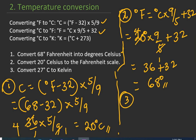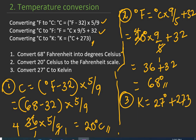Finally, how do you convert from degrees Celsius to Kelvin? Very simple. Let's convert 27°C to Kelvin. You use the formula: Kelvin equals Celsius plus 273. So 27 plus 273 gives 300 Kelvin.